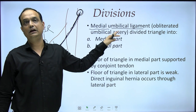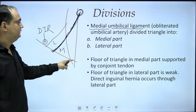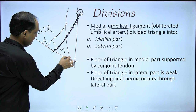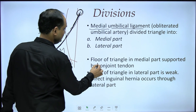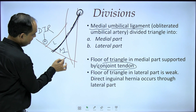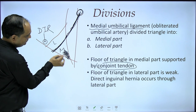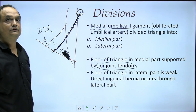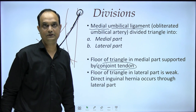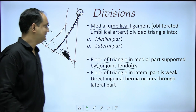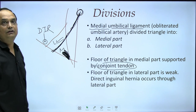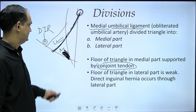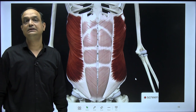Of these two halves, the floor of the medial half is strong because it is supported by the conjoint tendon. The conjoint tendon is the composite tendon formed by the transversus abdominis and internal oblique muscle fibers. The floor on the lateral side is weak, and this weak lateral area of Hesselbach's triangle is more prone to direct inguinal hernias.